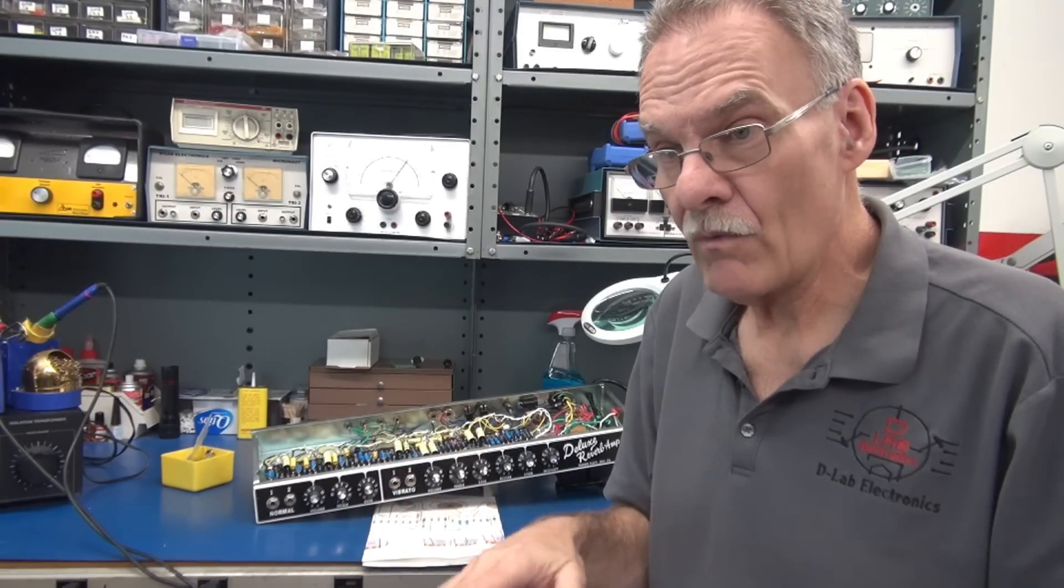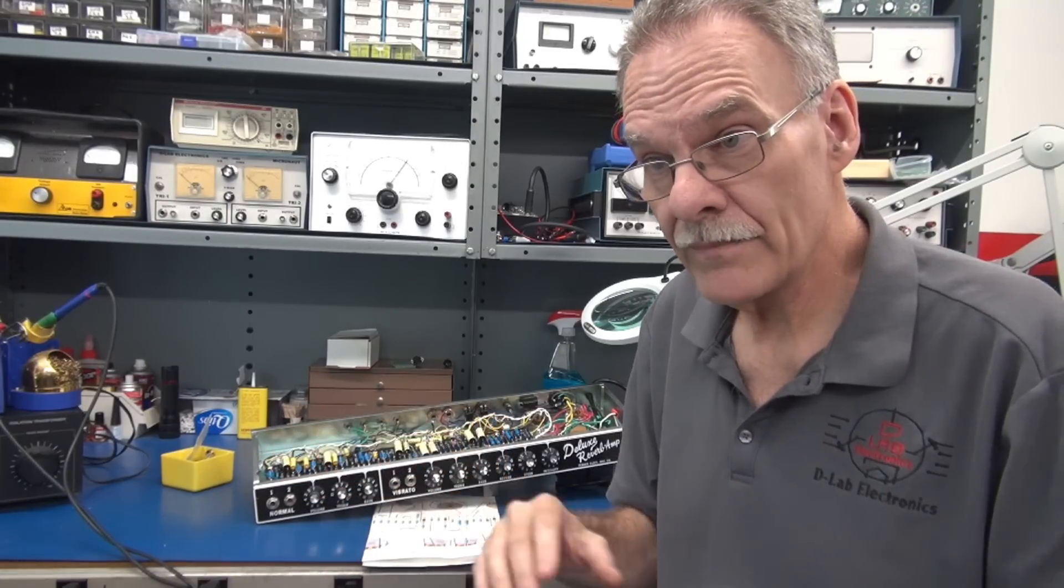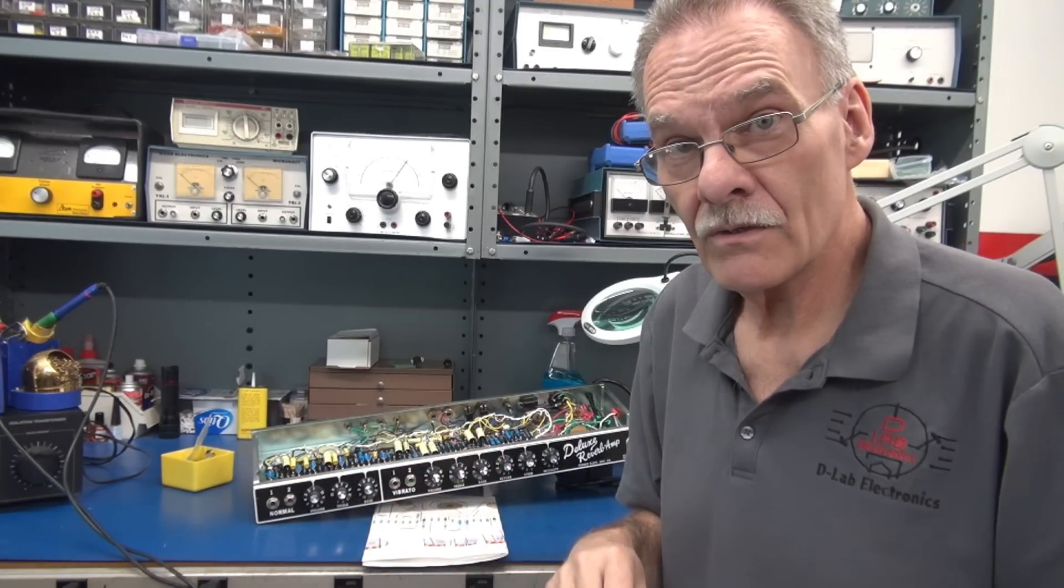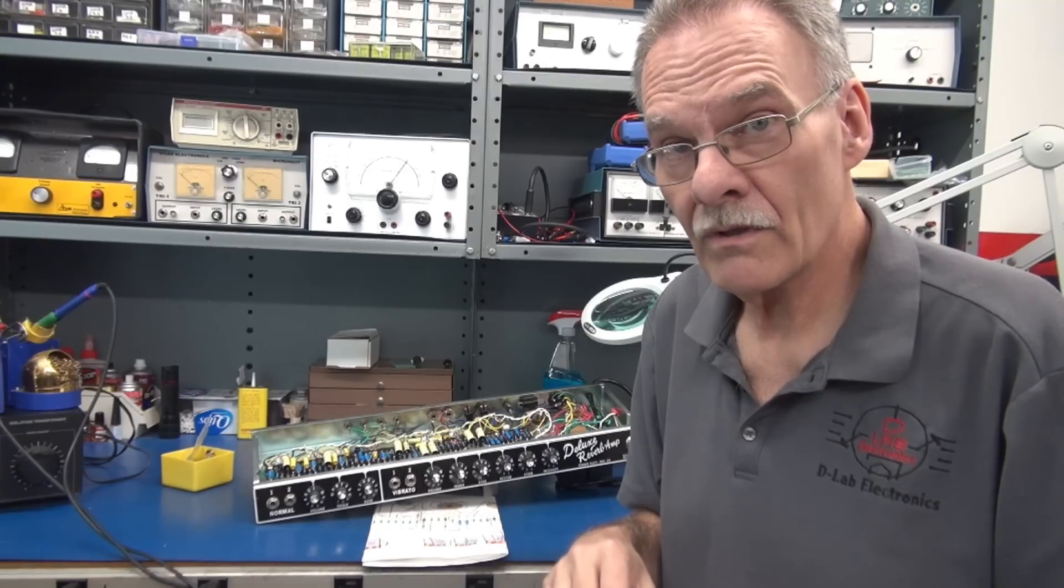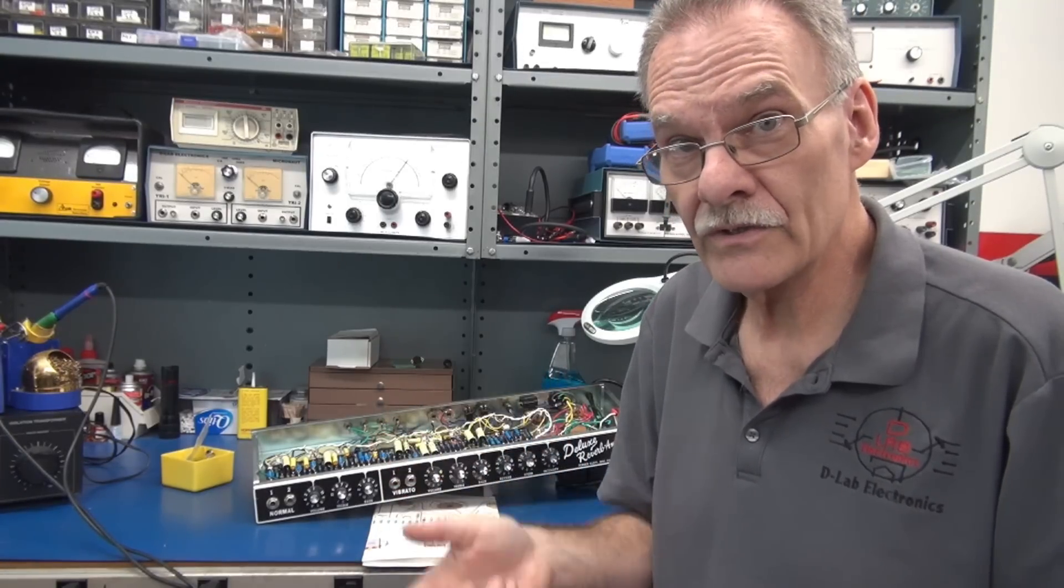He says, I want that to be a Fender Deluxe amp. And I need that reliability. So the agreement is, we remove the Hoffman board. And install a Fender eyelet board. Let me show you the insides of this thing.